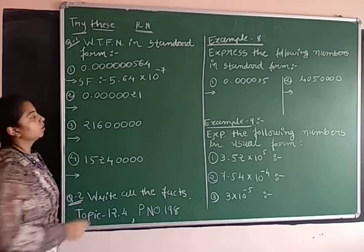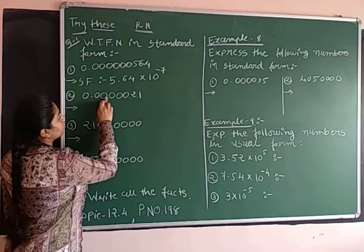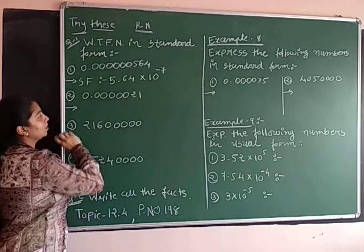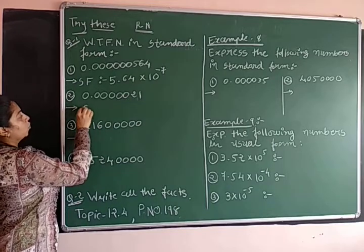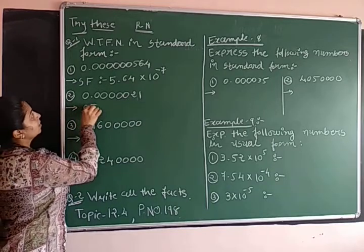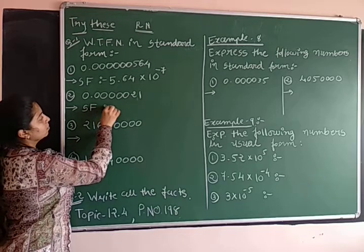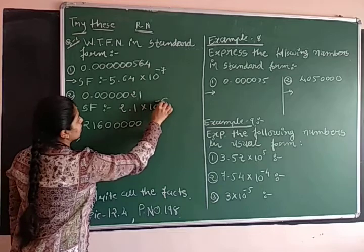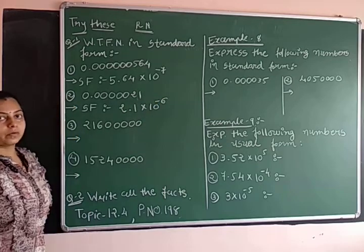So 1, 2, 3, 4, 5 and 6. How many steps? 6 steps. So what is the standard form? 2.1 into 10 raised to minus 6.